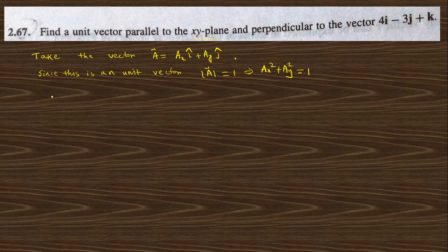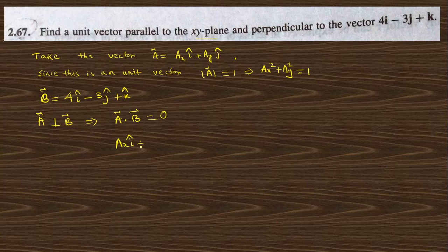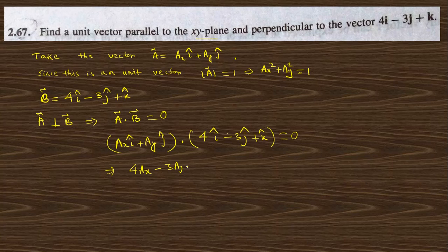This vector A is perpendicular to vector B, where B is 4i-cap minus 3j-cap plus k-cap. A perpendicular to B implies A dot B equals zero. So (a_x i-cap plus a_y j-cap) dot (4i-cap minus 3j-cap plus k-cap) equals zero, giving us 4a_x minus 3a_y equals zero, therefore a_x equals (3/4)a_y.